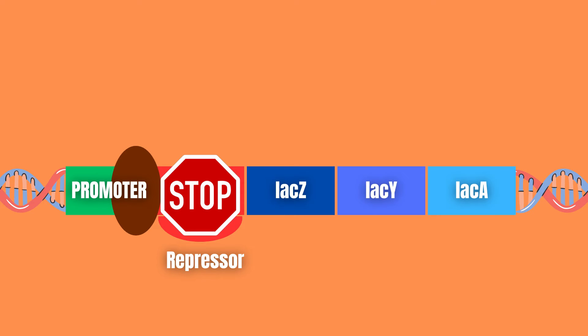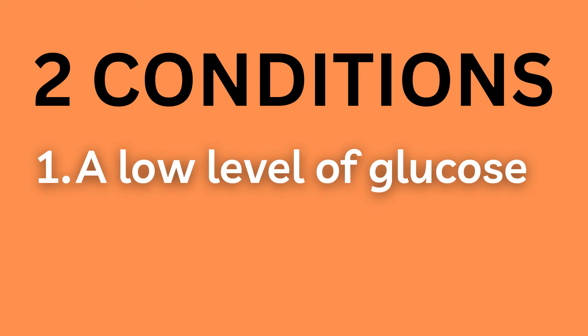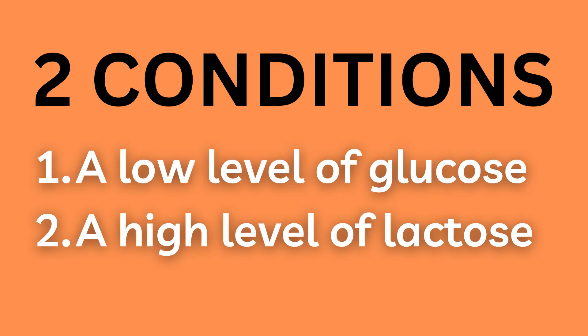There are two conditions that, if true, activate the lac operon. These conditions are: one, a low level of glucose, and two, a high level of lactose in the environment. This makes a lot of sense since if there is a high level of glucose there is no need to break down lactose into glucose, and if there is no lactose to break down, well, you understand the problem.